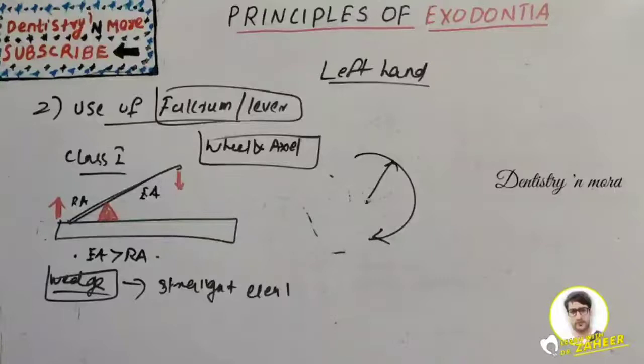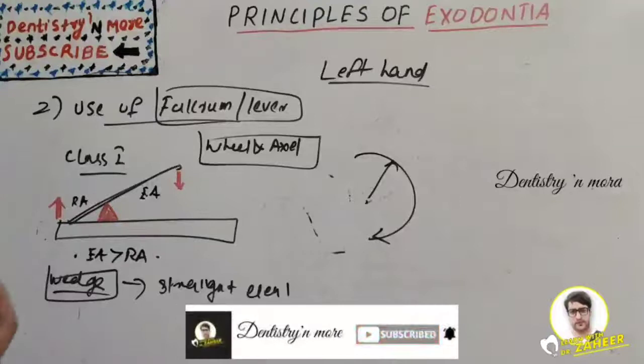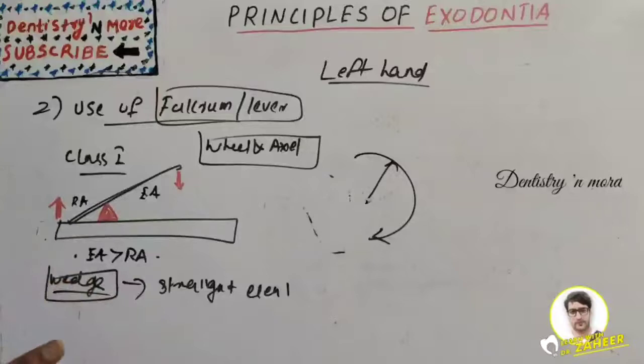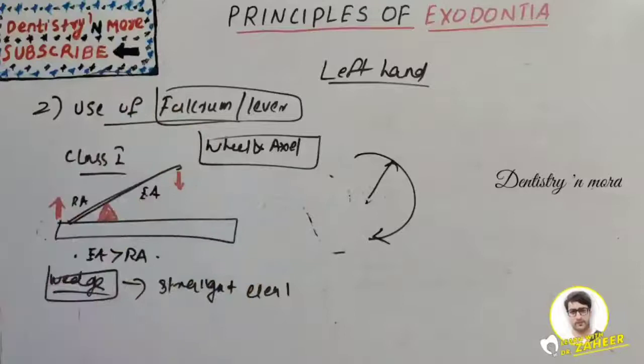Post-operative instructions include: remove the cotton gauze at least one hour later; take cool and soft diet for at least 24 hours; avoid hot and hard diet for 24 hours; never use a straw for drinking as it creates negative pressure and bleeding; do not rinse forcefully; do not disturb the extraction site for at least 24 hours to allow clot formation and healing — disturbance can cause dry socket; and instruct the patient to maintain oral hygiene. If suturing was done, remove sutures after one week.